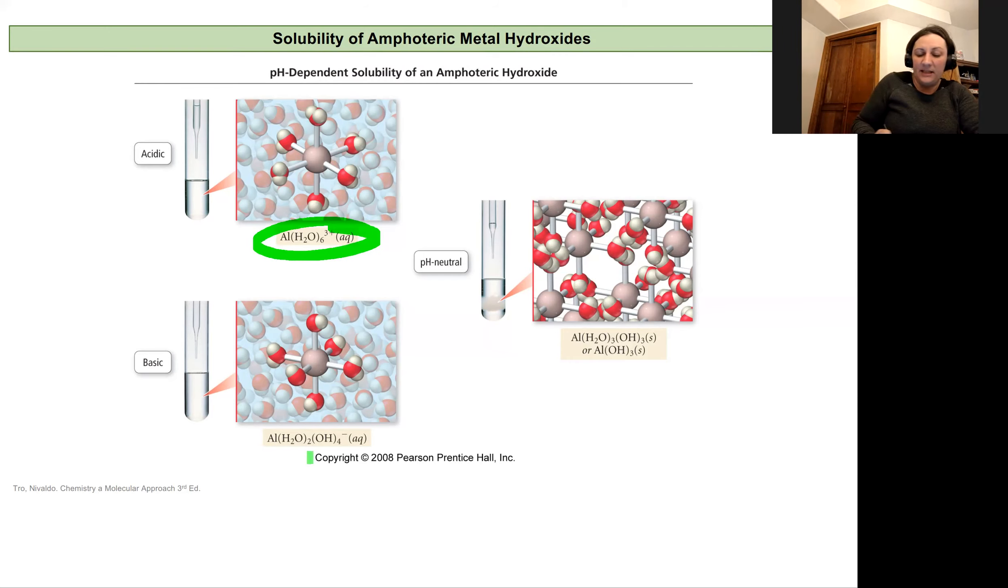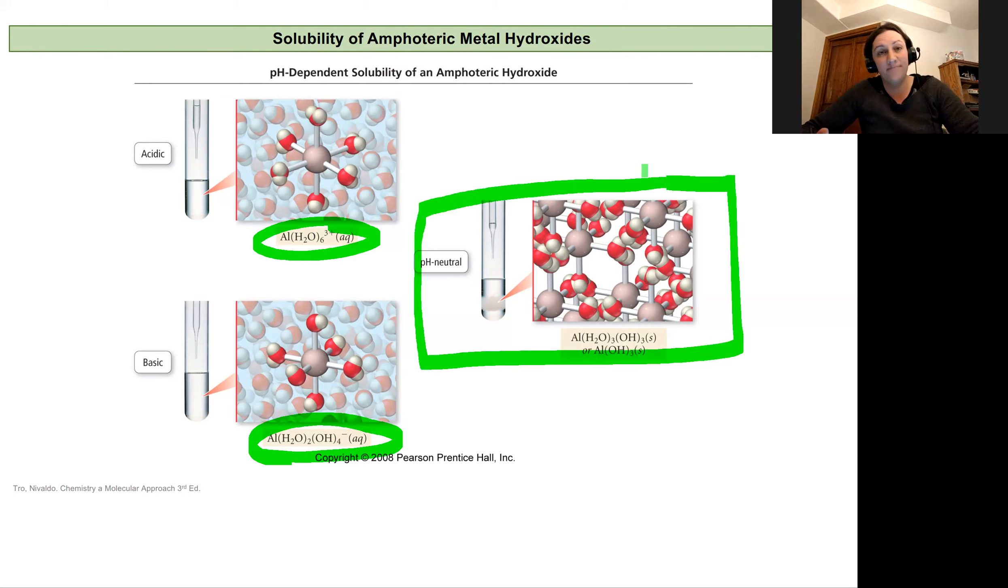At basic pHs, when we have more hydroxide than water molecules coordinated to the aluminum, we're going to see it's also soluble. But it's going to go through an insoluble phase at a neutral pH. It's going to form a solid then.